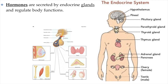Hormones are secreted by glands within our body called endocrine glands. Endocrine glands, as you can see on the diagram on the right, are found throughout our body and they produce hormones that enter our bloodstream. Once they enter our bloodstream, the hormones are moved through our blood to every single tissue and every single cell in our body.